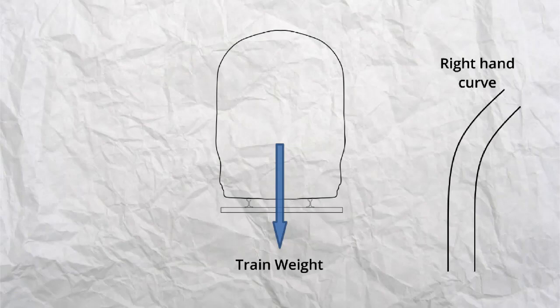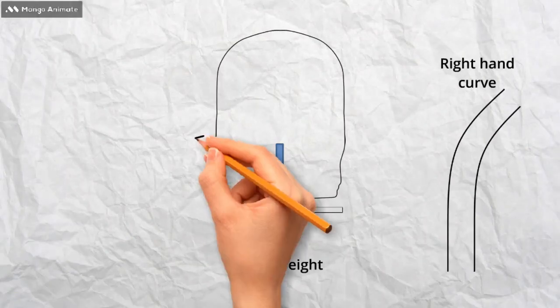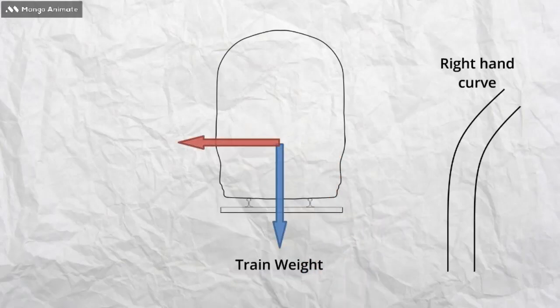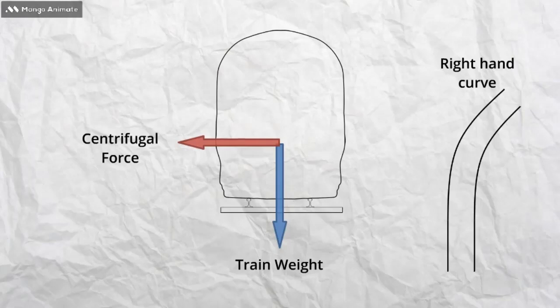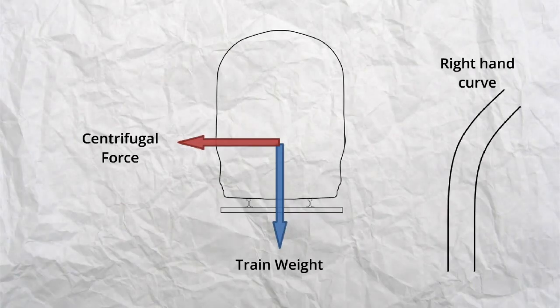So on a curve, a second force, centrifugal force is introduced. This acts outwardly, parallel to the plane of the rails and sleepers. This has the effect of pulling the trains towards the outside of the curve. When two different forces are acting on the same object, the combination of the two forces is called the resultant force.